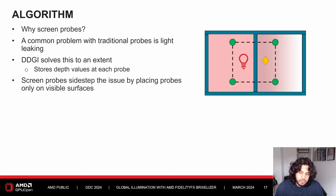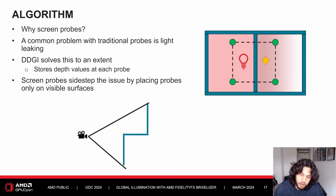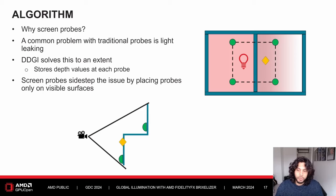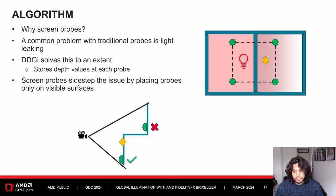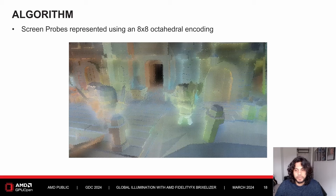Screen probes sidestep this issue entirely by placing probes only on the visible surfaces in the depth buffer. For example, when shading a point using screen probes, we can clearly ignore a probe that is too far away, using simple depth and normal comparisons to weigh probe contributions. Screen probes also have the benefit of being denser than a world space probe grid, especially when close to the viewed surface. They are represented using an 8×8 octahedral encoding.